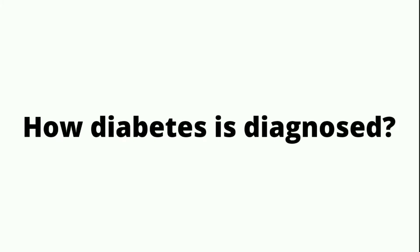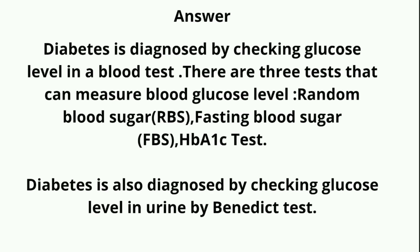Third question: How is diabetes diagnosed? Answer: Diabetes is diagnosed by checking glucose level in a blood test. There are three tests that can measure blood glucose level: Random Blood Sugar (RBS) and Fasting Blood Sugar (FBS).